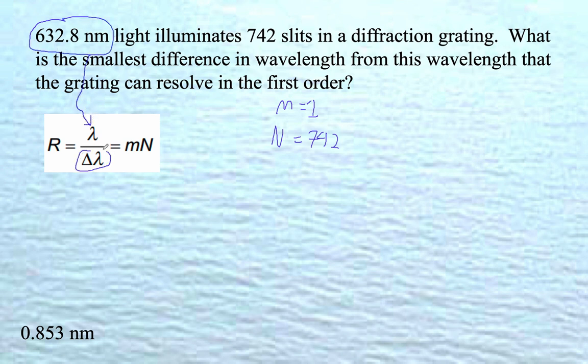And then we're solving for this. Notice that we hardly ever solve for R, which is, yeah, it's just normal in these confusing times. So I'm going to go 632.8 over the difference in wavelength, which is what we're solving for, is 1, that's our order, times 742, right?